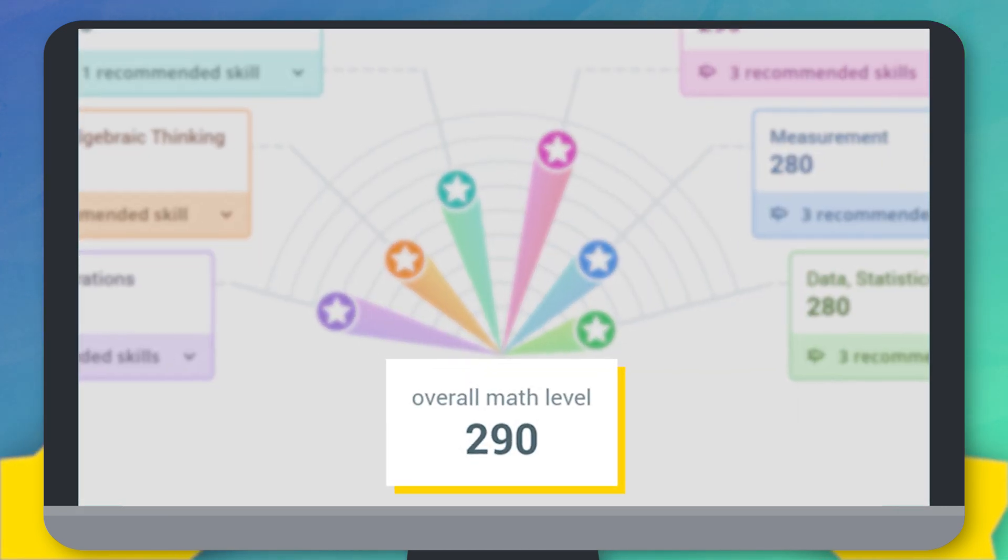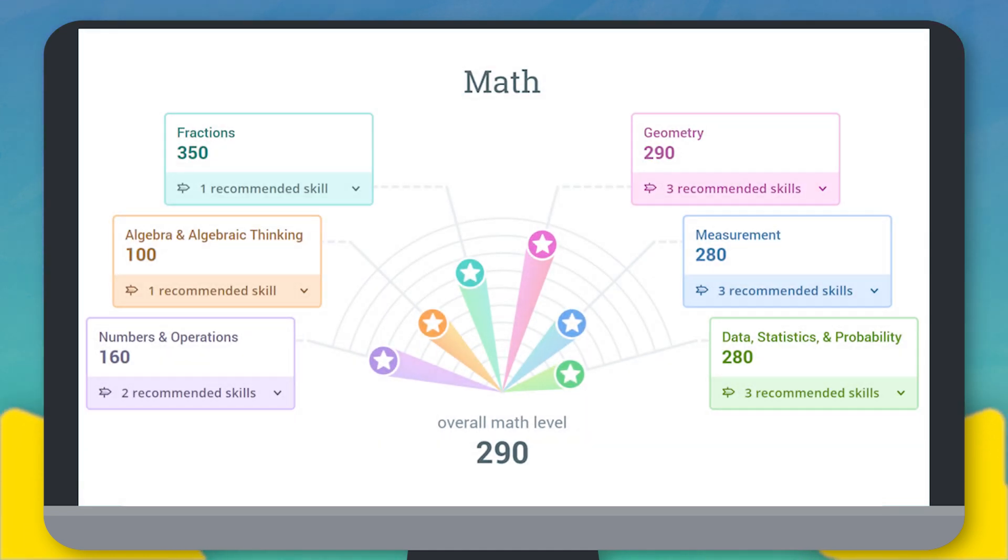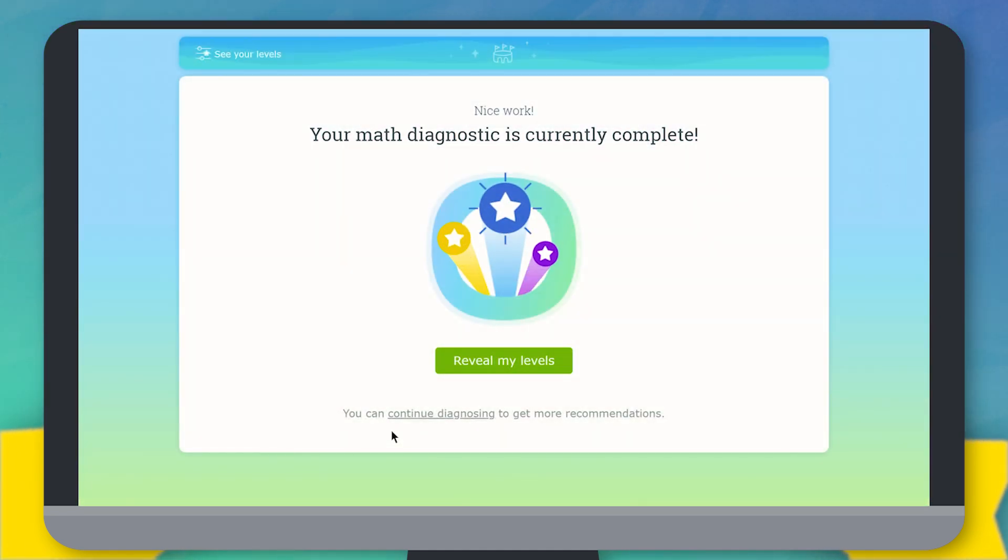This is what it looks like when your levels are all up to date, with stars in every section. It usually takes about 45 minutes per subject to get up to date, but you don't have to do this all at once. You can always take a break if you need to and come back to the diagnostic when you're ready.